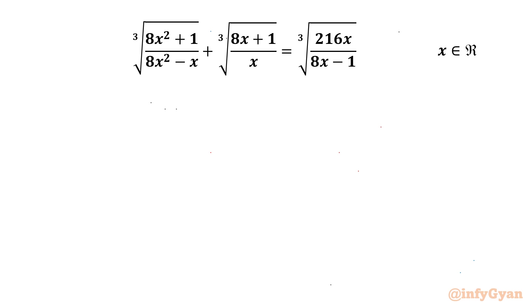Hello everyone, welcome back to InfiGiang. In this video we are going to take up one very interesting radical equation problem for the real values of x. Let's get started by writing our denominators cannot be 0. So our answer: x cannot be equal to 0 and 1 over 8.